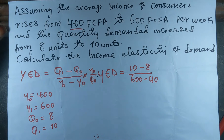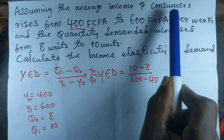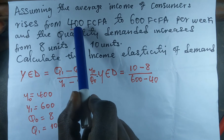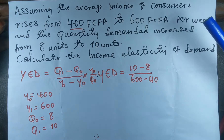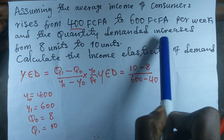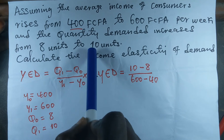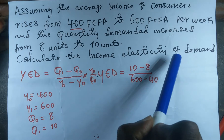In today's video I'm going to be showing you how to calculate income elasticity of demand. We have taken this example assuming the average income of consumers rises from 400 CFA francs to 600 CFA francs per week, and the quantity demanded increases from 8 units to 10 units. Our question is to calculate the income elasticity of demand.